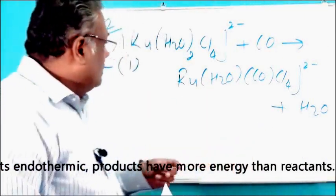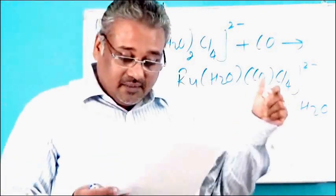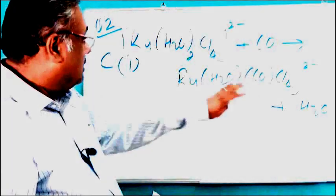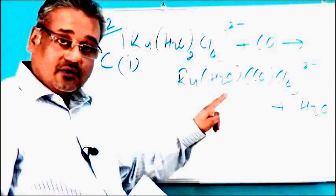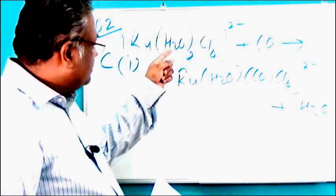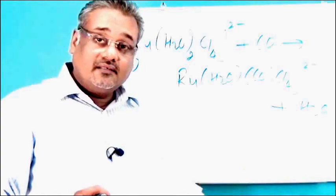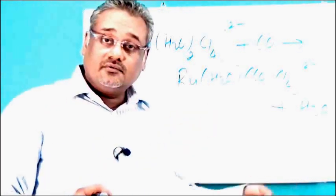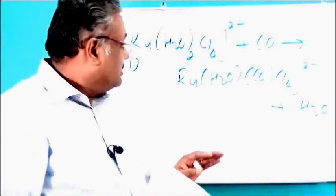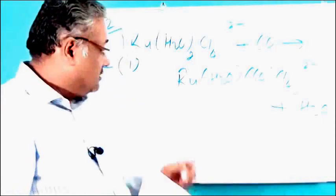Now let's have a look at C part 1. There's an equation given with a complex reacting with carbon monoxide, and that's the product. The question asks to describe the type of reaction you see here. You should pay attention to the difference between the product and the reactant. The reactant has two H₂O molecules and the product has only one. One of the carbon monoxide molecules has taken the place here and one of the H₂O has been replaced. In transition elements, ligands donate their lone pairs to the central metal ions to form complexes. So in this reaction, H₂O is a ligand and it has been replaced by carbon monoxide, another ligand — that's why it's a ligand exchange or ligand substitution reaction.